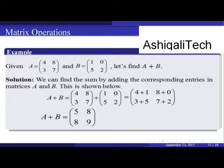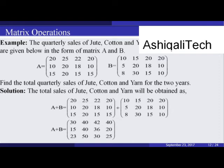We find the sum by adding the corresponding entries in matrices A and B. Adding 4+1, 8+0, 3+5, and 7+2, we get A + B = [[5,8],[8,9]].